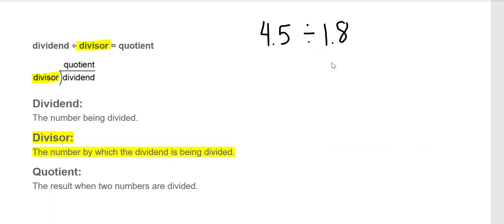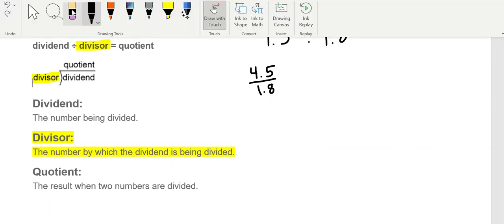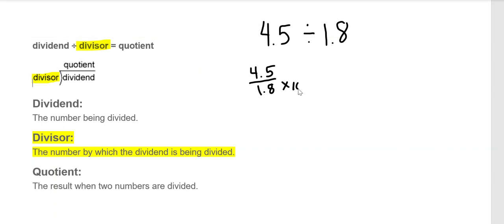1.8 is not a whole number, therefore we are going to have to rewrite this problem so that the divisor is a whole number. Just like with fractions, as long as whatever you do to the top you do to the bottom, you have an equivalent fraction. We're going to apply that same concept with division. We need to multiply the bottom by a power of 10 — 1.8 times 10 is equal to 18.